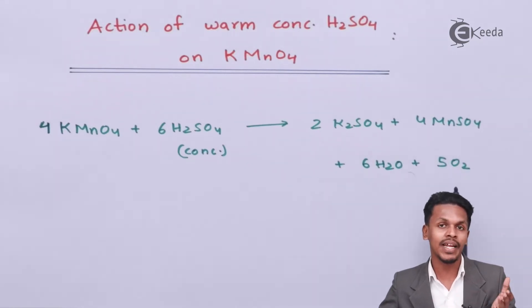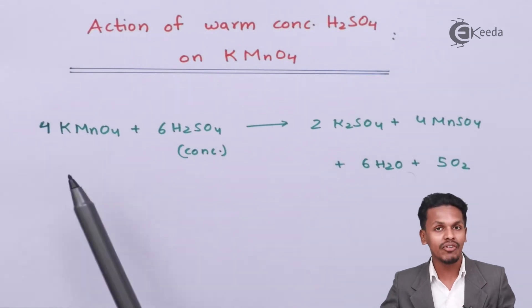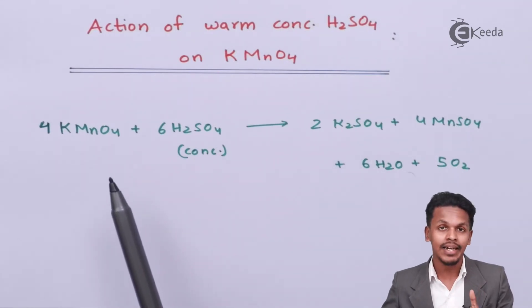In the previous reaction we obtained Mn2O7, manganese heptoxide, which was oily in nature. But in this case there is evolution of O2. This represents different reactions depending on the temperature and conditions.